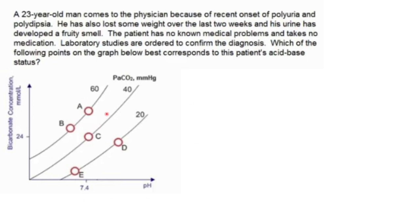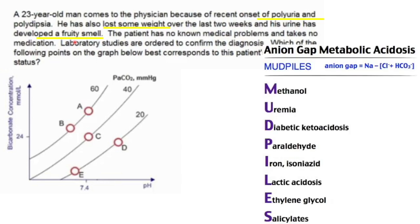The first question is about a curve - the acid-base curves. The question says a 23-year-old man, and being pretty young you're going to start thinking about DKA. He comes to the physician because of recent onset of polyuria and polydipsia, has also lost some weight over the last two weeks, and his urine has developed a fruity smell. By now I think you've figured out this is a case of ketoacidosis - diabetic ketoacidosis.